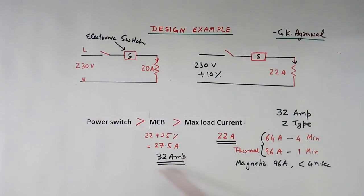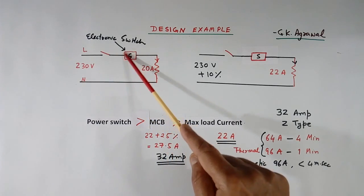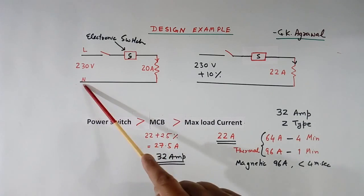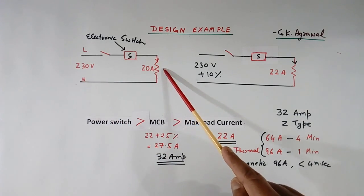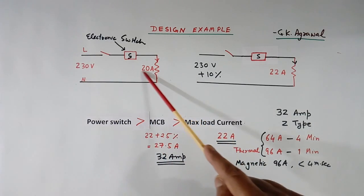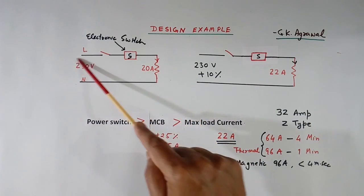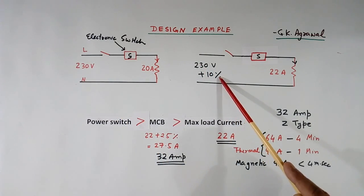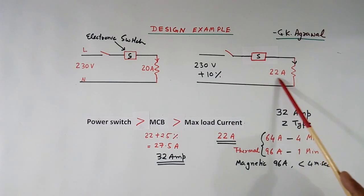This is a design example. The engineer can design their own way. This is MCB, this is electronic switch - it can be thyristor, it can be triac or some other. This is load, it may be resistor or some other thing. Suppose this is 230 V AC and 20 A current is normal current. Now because voltage is fluctuating, it can go plus 10% also. So current also will increase. Current will become 22 A.